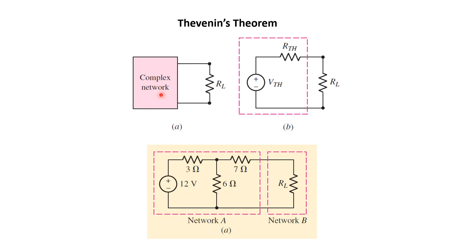...then what we can do is simplify this complex network such that it is replaced by one voltage source whose value is Vth and one resistance whose value is Rth. This entire complex network is replaced and connected in series with the load RL, and then we can easily calculate whatever quantity we are interested in — whether it is current or voltage across the resistance.